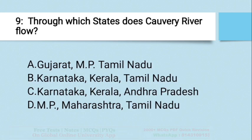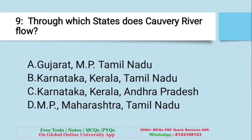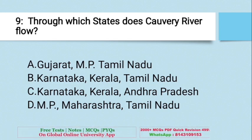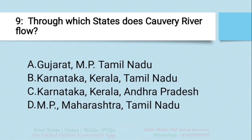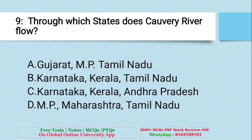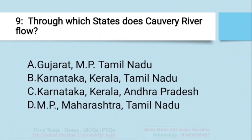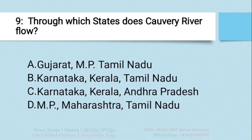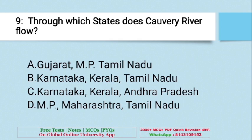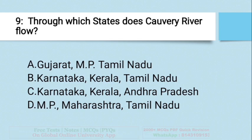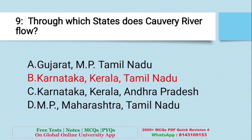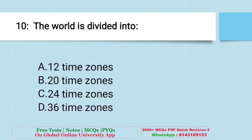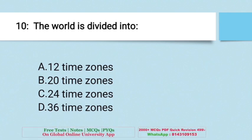Question: Through which states does the Kaveri river flow? A. Gujarat, MP, Tamil Nadu; B. Karnataka, Kerala, Tamil Nadu; C. Karnataka, Kerala, Andhra Pradesh; D. Madhya Pradesh, Maharashtra, Tamil Nadu. The right answer is B — Karnataka, Kerala, and Tamil Nadu.